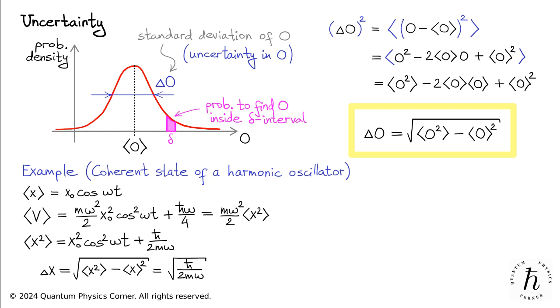The calculation of the uncertainty in momentum proceeds along the same lines. First, we recall the expression previously obtained for the expectation value of the particle's momentum. Then, we take the mean kinetic energy of the system, previously obtained,